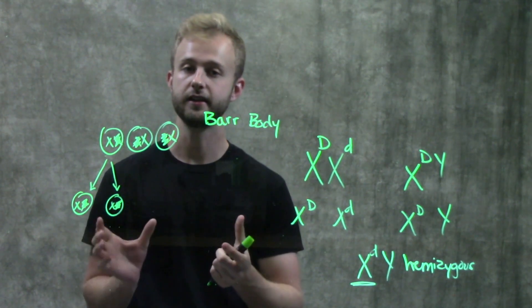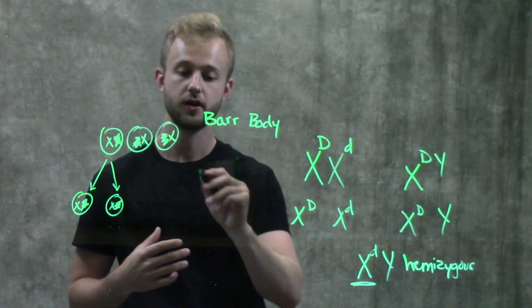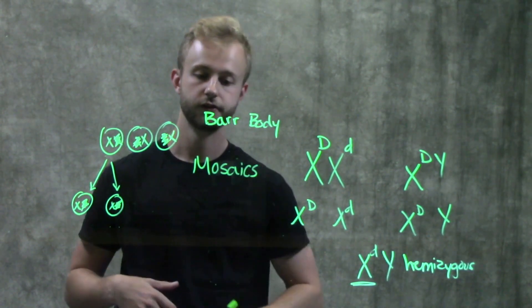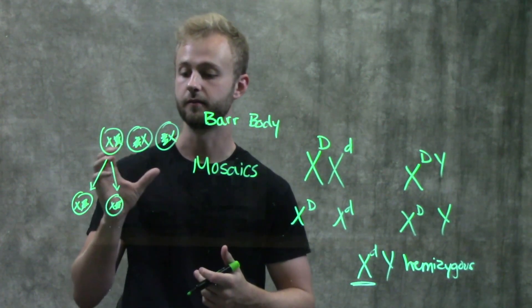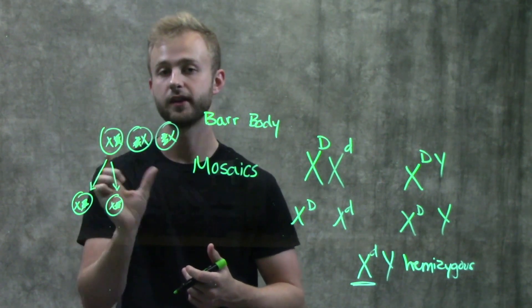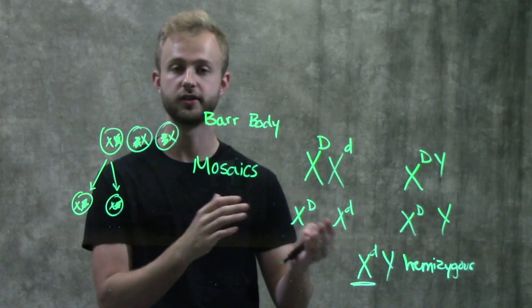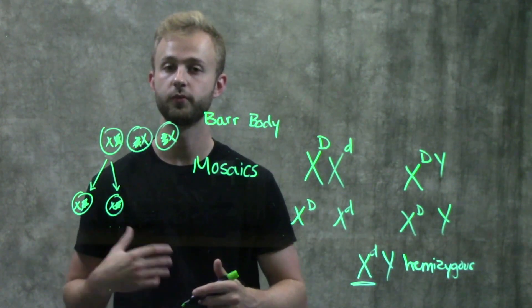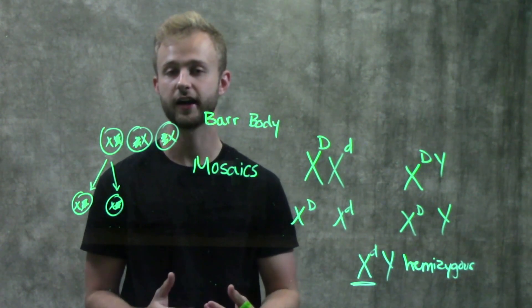And so this pattern can lead to a unique kind of feature that we can see sometimes called mosaics. So if an individual is mosaic for a certain trait, it would be because this X inactivation inactivates random X chromosomes. So some cells will get X chromosomes with a particular allele for a certain gene and the other cells might get the other chromosome with a different allele for that gene.